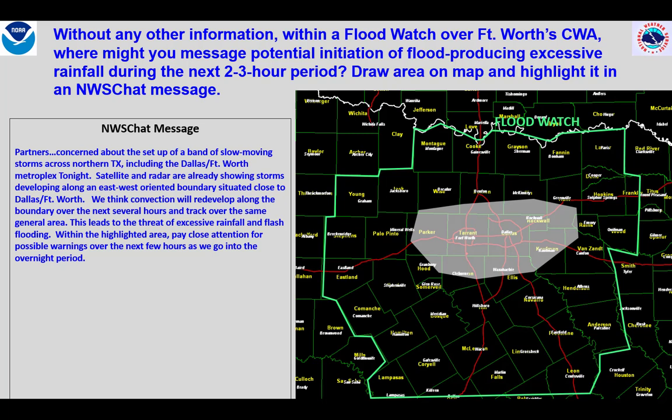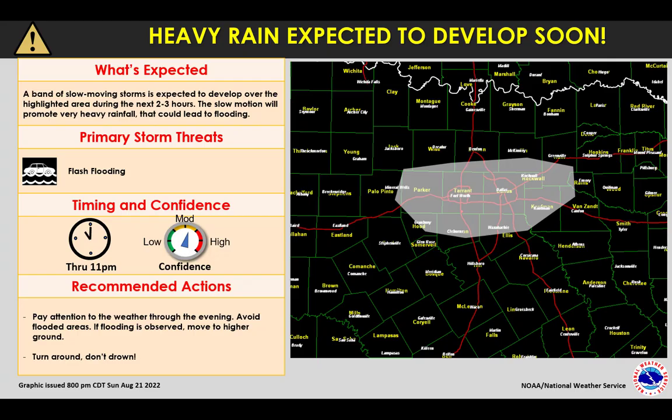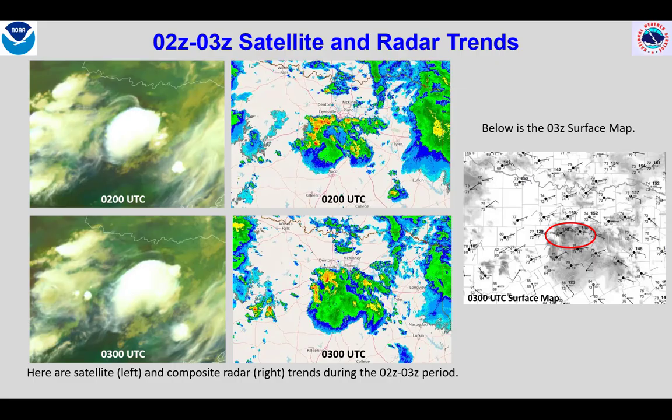My threat message focuses on the what, where, and when. Here's how I might design a social media graphic focused on those elements. My confidence level is moderate, as the ingredients are set up to support heavy rainfall, but it hasn't developed just yet, though it's expected during the next two to three hours. This template can be set up in different ways — there's no single correct answer when it comes to template design. Through 3Z, my concerns are already starting to be confirmed.